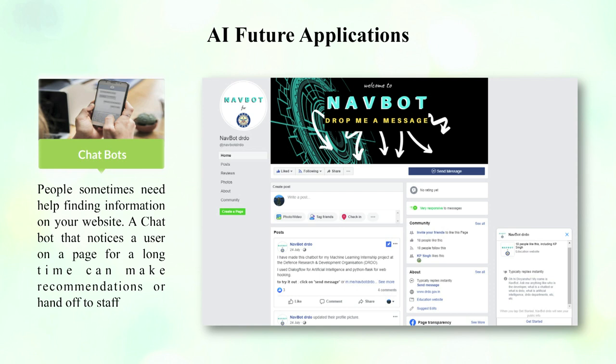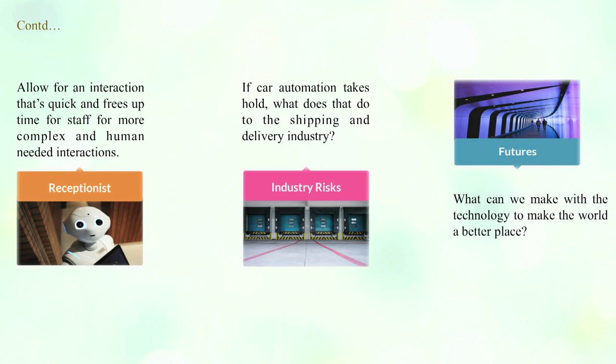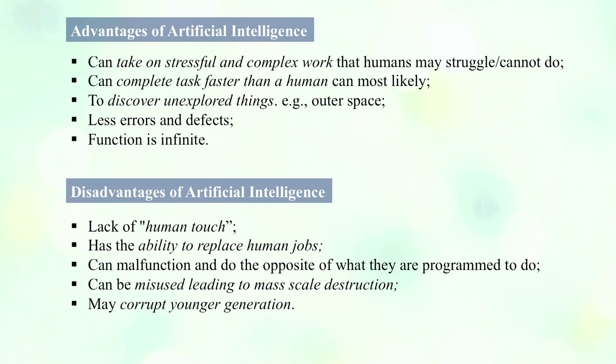The future of AI applications in libraries is based on chatbots. People sometimes need help finding information on a website; a chatbot that notices a user on a page for a long time can make recommendations or hand off to staff. One AI-based chatbot application developed for finding instant information is called NubBoard, developed for DRDO. Through the DRDO network of labs across the country, if you need to find information in real time by asking questions, NubBoard provides the information instantly and precisely in a text-based format accessible through mobile devices.